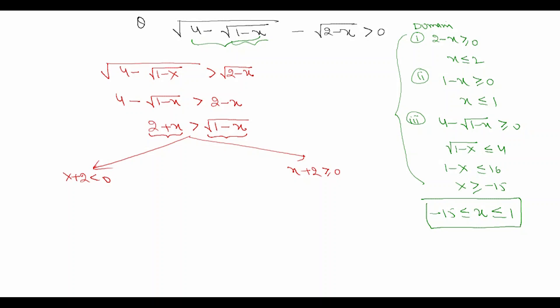In Case 1, when x + 2 < 0, the left-hand side is negative while the right-hand side is positive, so a negative quantity cannot be greater than a positive one. Therefore, Case 1 yields no solution.